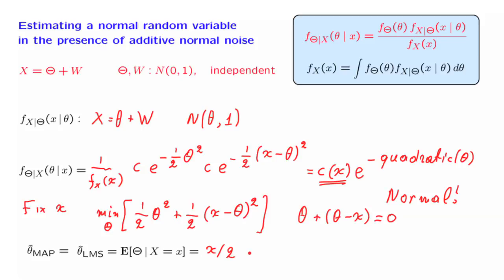If we want to talk about estimators, which are now random variables, the estimator takes the value x/2 whenever capital X takes the value little x. Therefore, it is the random variable equal to capital X over 2. This is a relation between random variables, while the earlier expression was the corresponding relation between numbers given a specific value of little x.